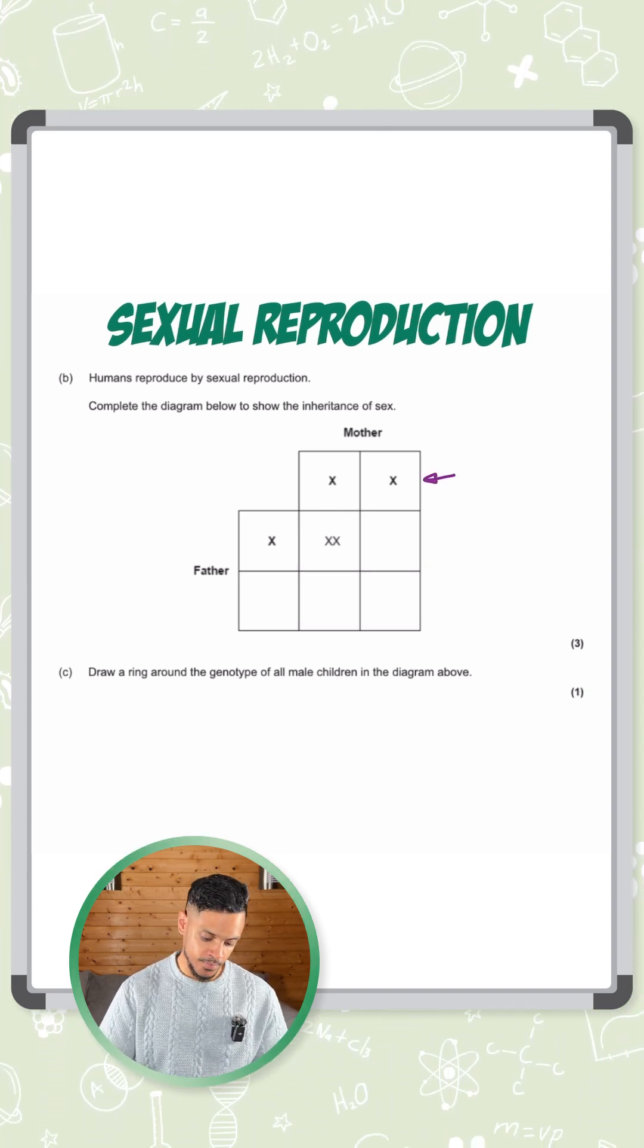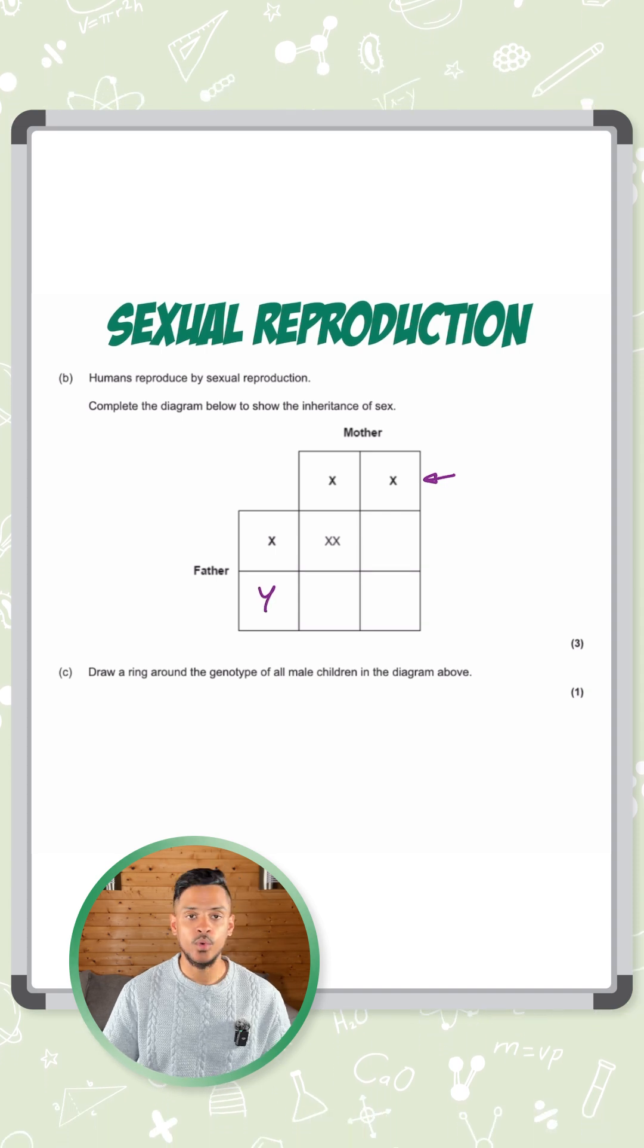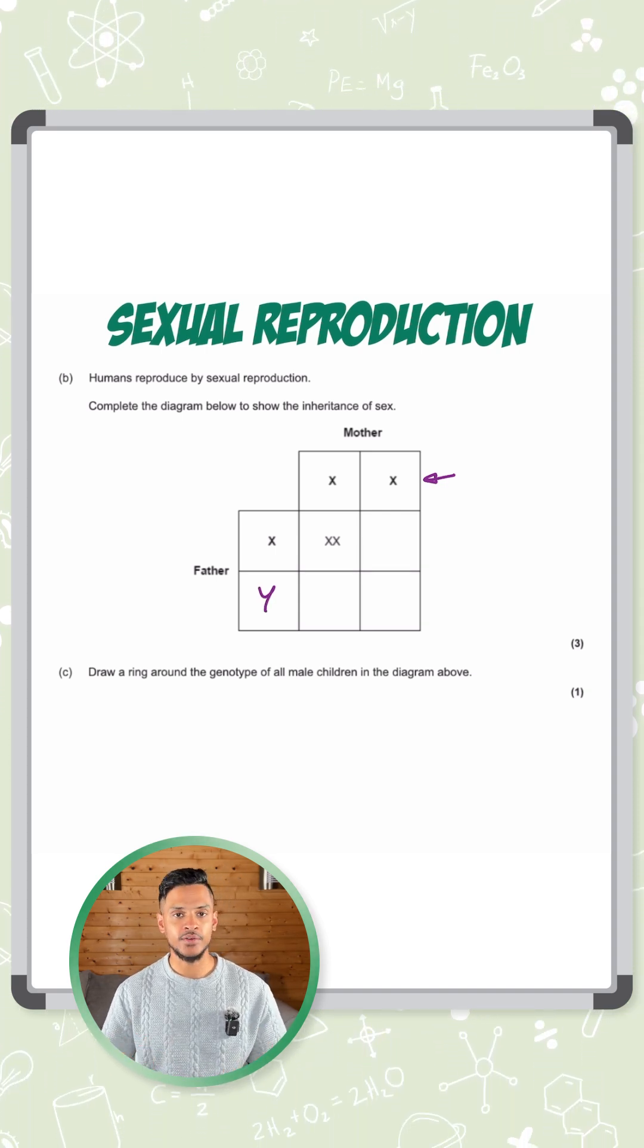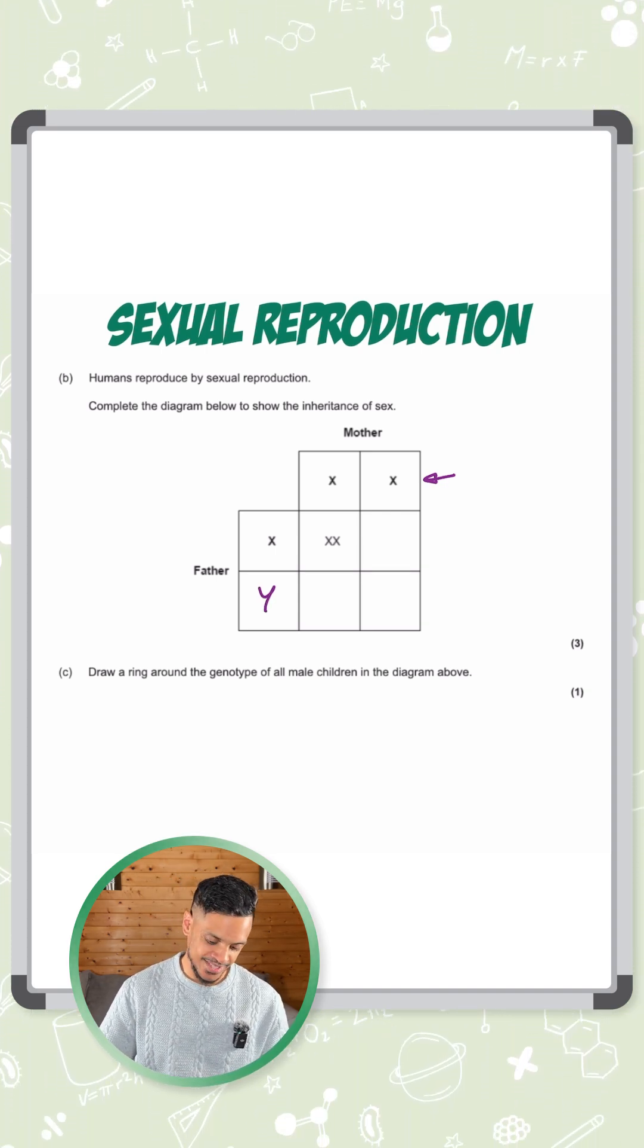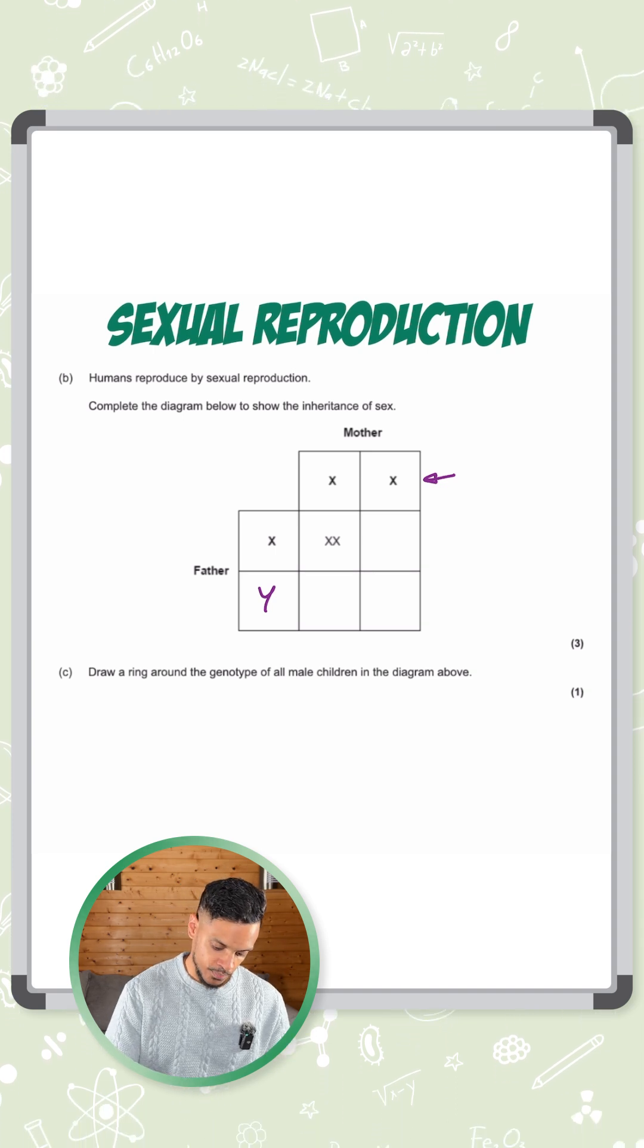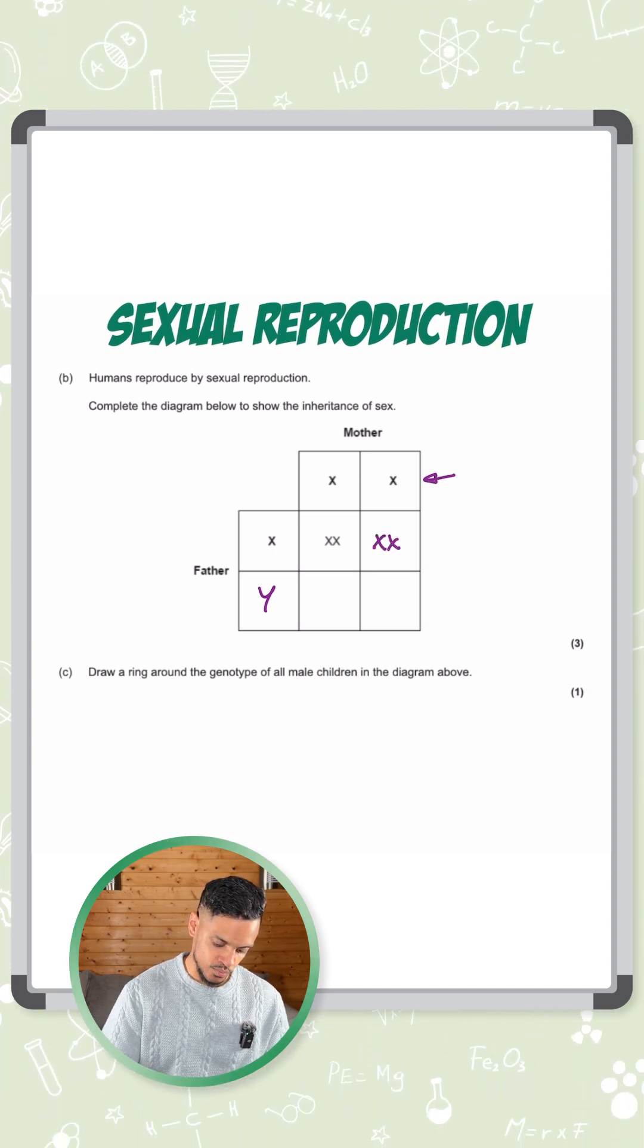Now for the father, which is a male, we have an XY chromosome. Now we can fill out this Punnett square. So we've got XX on the top left. On the top right, we're going to have an XX as well.